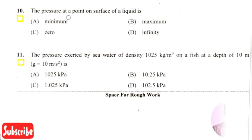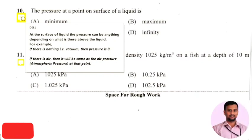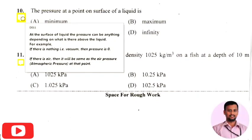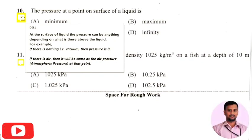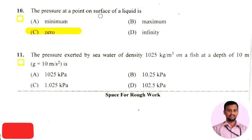The next question: the pressure at a point on the surface of a liquid is — the right answer is option 3, that is 0. At the surface of a liquid, if there is nothing on the surface we consider it as vacuum, so the pressure will be 0. If air is present, the pressure would be atmospheric pressure, but since the question doesn't specify, we assume vacuum, so pressure is 0.